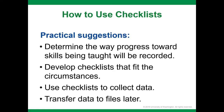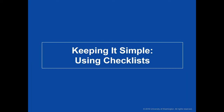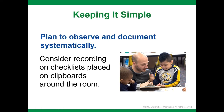Another practical suggestion for using checklists is for the purpose of ongoing data collection. Because checklists allow teachers to easily mark whether or not a child has demonstrated a skill, checklists can be used in both small and large group activities to monitor multiple children's progress. When using checklists for ongoing child assessment, it's important to keep it simple. Figure out how you will systematically observe and document child progress towards meaningful goals. Consider recording information on checklists placed on clipboards around the classroom to facilitate easy access and avoid missing assessment opportunities.